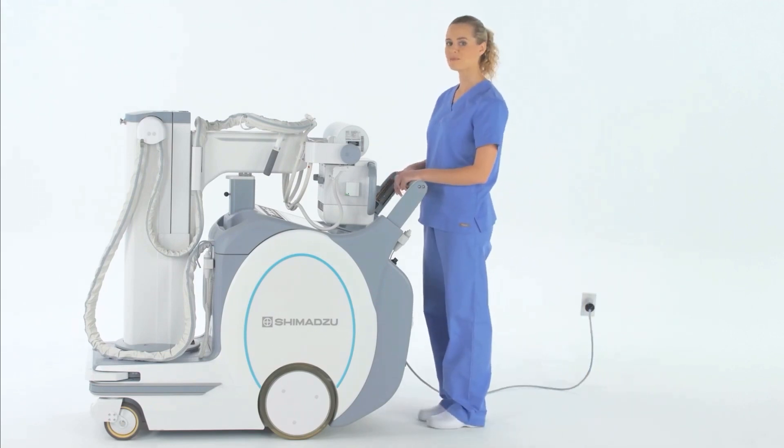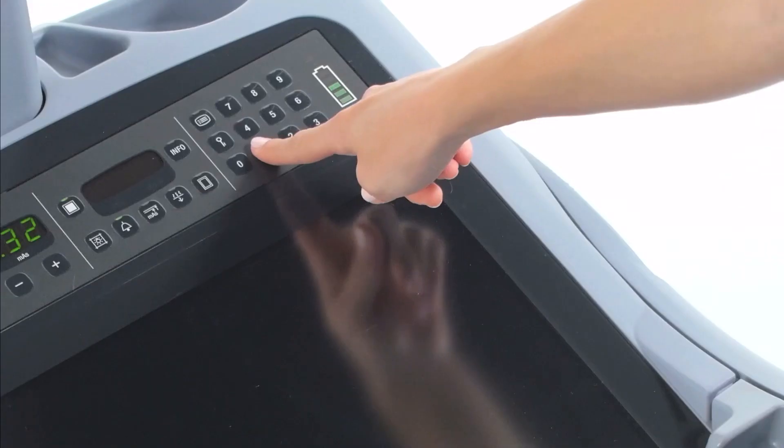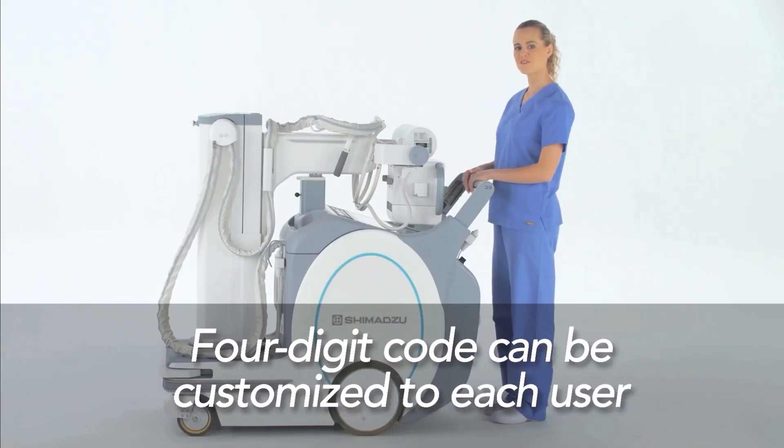To activate the unit, turn on the power switch located to the left of the drive handle, enter your 4-digit code, and press the key button icon. It is now unlocked and ready for use!